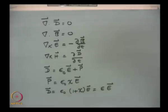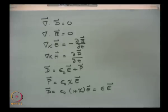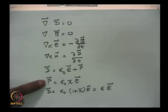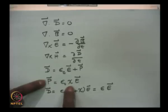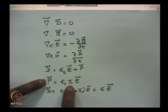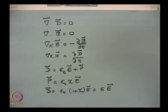If χ is a scalar quantity, this equation tells me P and E are parallel to each other, and so D and E are also parallel — that is an isotropic medium. So when I write P = ε₀χE: if χ is independent of position it is homogeneous; if χ is a scalar it is isotropic. Writing D = εE with ε a scalar independent of position corresponds to a linear homogeneous isotropic medium.